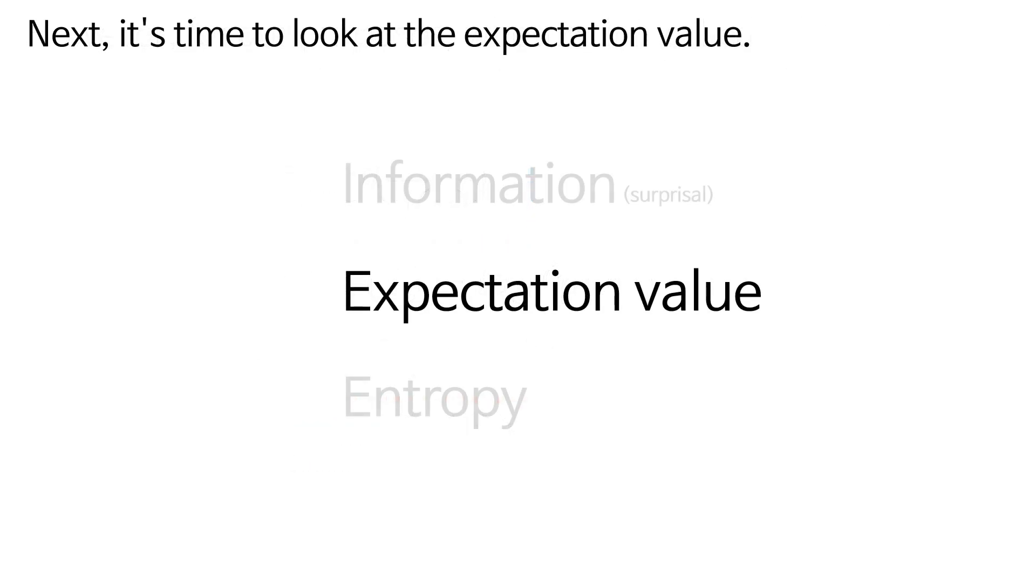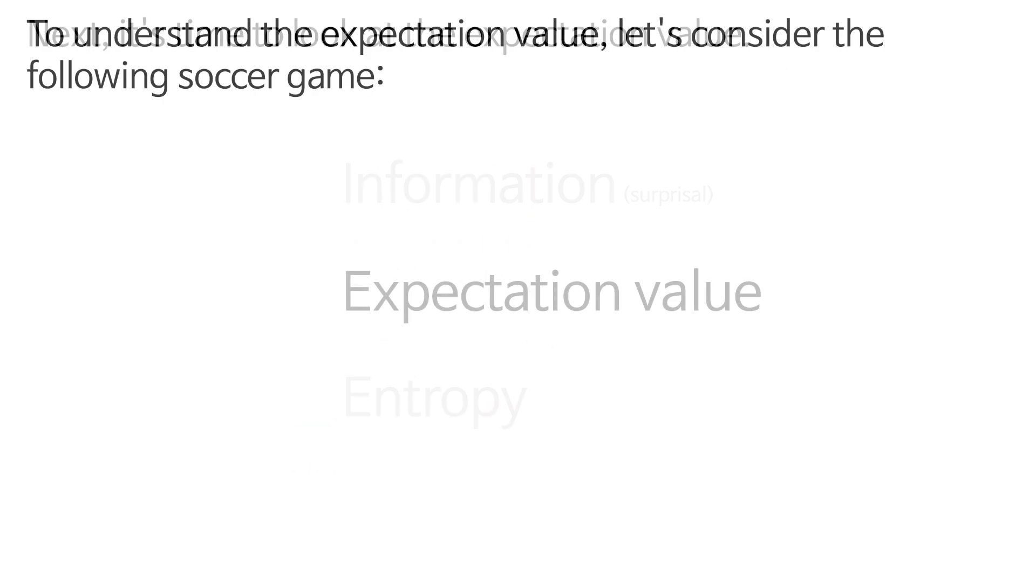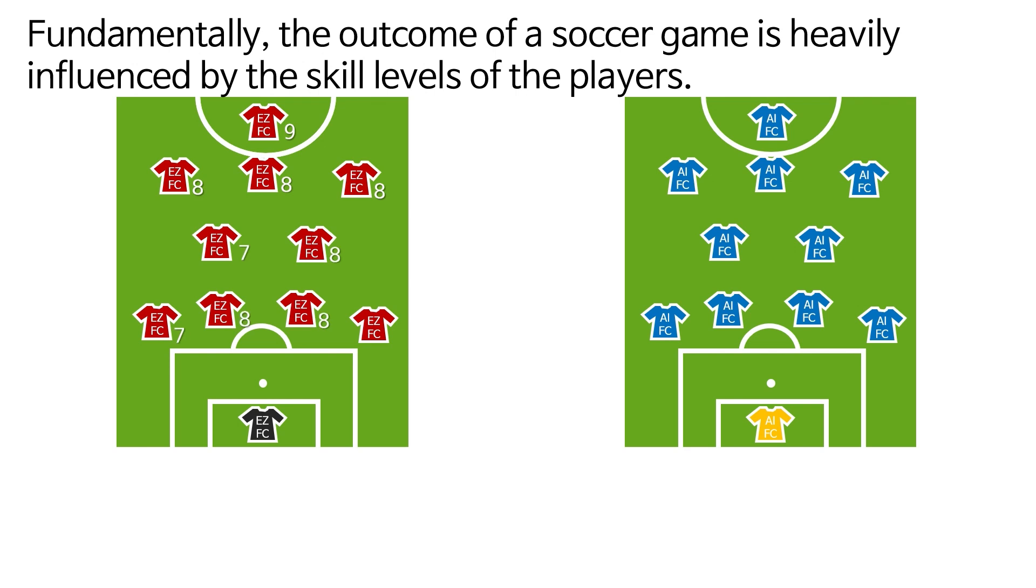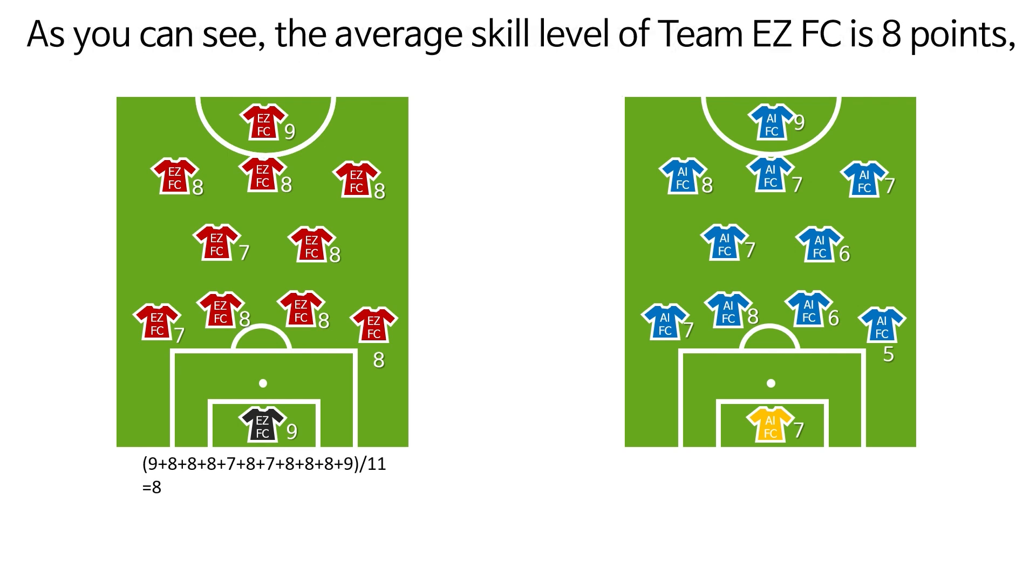Next, it's time to look at the expectation value. To understand the expectation value, let's consider the following soccer game. Fundamentally, the outcome of a soccer game is heavily influenced by the skill levels of the players. As you can see, the average skill level of Team Easy FC is 8 points, and the average skill level of Team AI FC is 7 points.